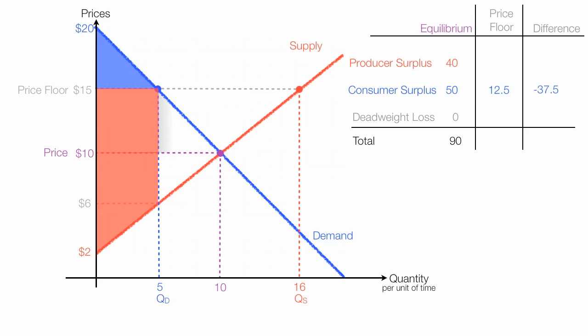To calculate deadweight loss, I'm going to take the area of this triangle, and it has a height of 5 and a base of 5 for an area of 12.5. Again, 1 half base times height. This other triangle has a height of 4 and a base of 5, and so its area is 10. Again, 1 half times 4 times 5 is 10. If I add these two triangles together, they add up to 22.5, which is deadweight loss.